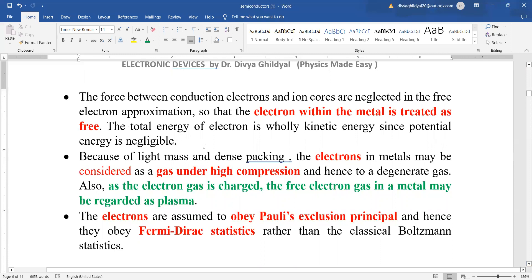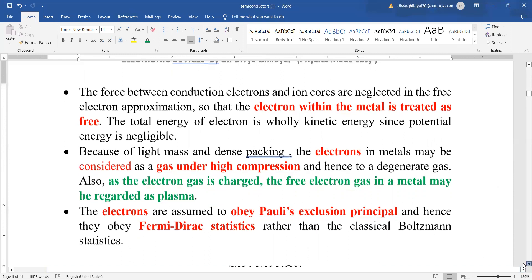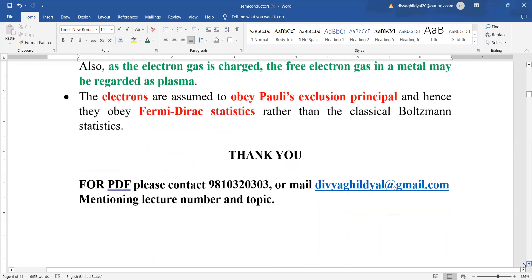Because of the light mass and dense packing, the electrons in metal are considered as a gas under high compression and hence a degenerate gas. Also, the electron gas is charged. The free electron gas in a metal may be regarded as plasma. The electrons assume Pauli's exclusion principle and hence they obey the Fermi-Dirac statistics rather than the classical Boltzmann statistics.